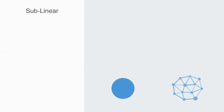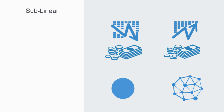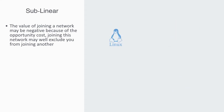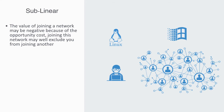In the initial phase of the network's formation, due to the limited number of nodes and connections in the network, the value of joining that network may in fact be negative because of the opportunity cost. Joining this network may well exclude you from joining another more mature network that already has lots of network value. For example, if you choose to adopt a Linux operating system, you will be limiting your capacity to interoperate with over 1 billion users of Windows. Thus, in terms of opportunity cost, you are actually having to pay to be part of this burgeoning Linux network. And the same would be true for a social network, digital currency, and any other type of network that has not reached a critical mass.